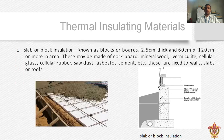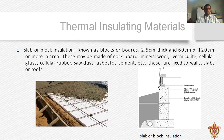Now let us discuss thermal insulating materials. There are different types. The first is slab or block insulation — you can see it on the image. Generally, slab or block insulation dimensions are 2.5 cm thick and 60 cm to 120 cm in area. This is generally made from corkboard, mineral wool, cellular glass, cellular rubber, and sawdust.